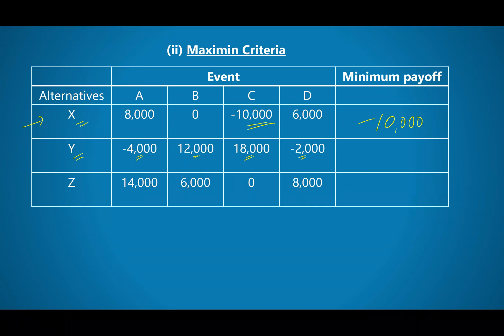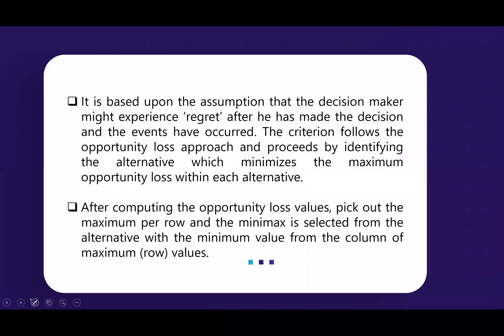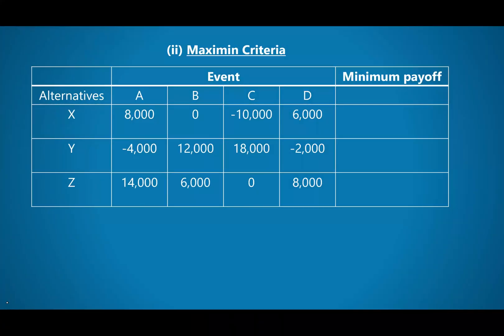Yes, the worst would be negative 4. Good. The worst would be negative 4, so I bring my negative 4 here, 4,000 in the column that I have labeled minimum payoff.